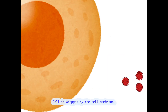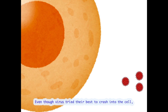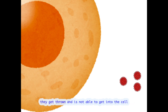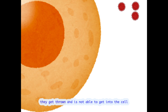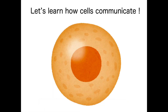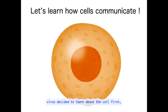Cell is wrapped by cell membrane. Even though virus tries its best to crash into the cell, it gets thrown and is not able to get in. In order to establish the next strategic attack, virus decided to learn about the cell first, beginning with how cells communicate with each other.